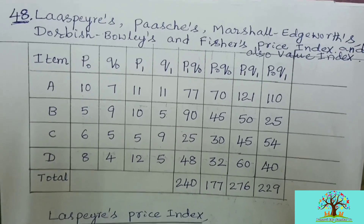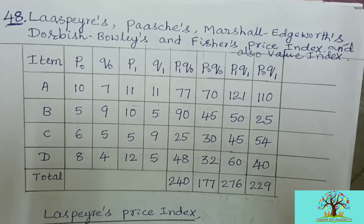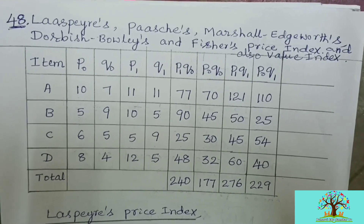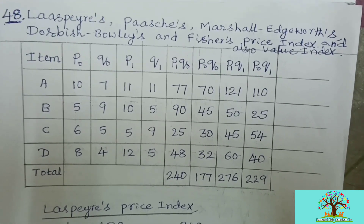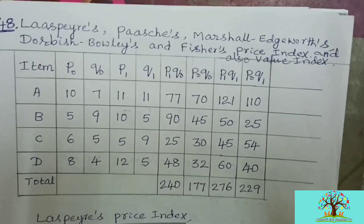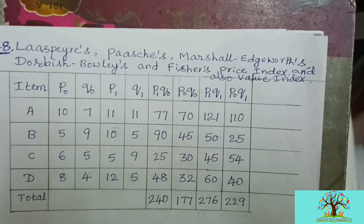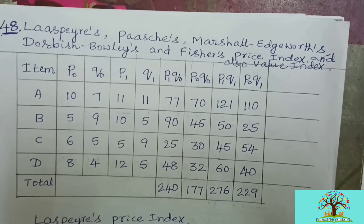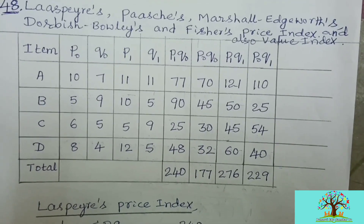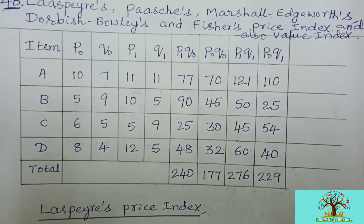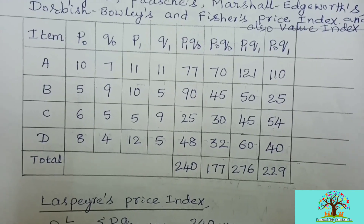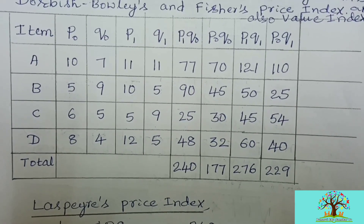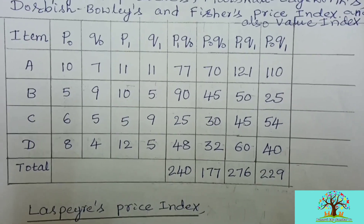The first four columns are already given: item, small p-naught (base year price), small q-naught (base year quantity), small p1 (current year price), and small q1 (current year quantity). Now find out the products in this order: p1·q-naught, p-naught·q-naught, p1·q1, and p-naught·q1. Find out the products, then add those products and find out the summations. Once you complete this table, we will proceed to find the different index numbers.